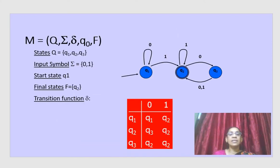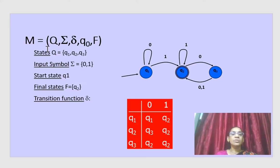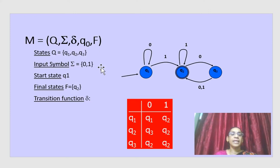Here is another diagram where states are represented as q1, q2, q3. This is converted into a transition table. The states q1, q2, q3 are listed, and the input symbols are 0 and 1 — represented as a set inside curly brackets. The starting state is represented by the arrow mark, so q1 is the starting state. The final state is q2, and since there may be more than one final state, it is given as a set inside curly brackets. The transitions are then filled into the table.